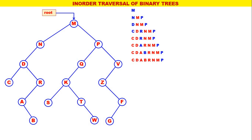Now the leftmost is P. The inorder for P is Q, P, V with P processed. The leftmost is Q. The inorder for Q is K, Q with Q processed, so K, Q with Q processed.